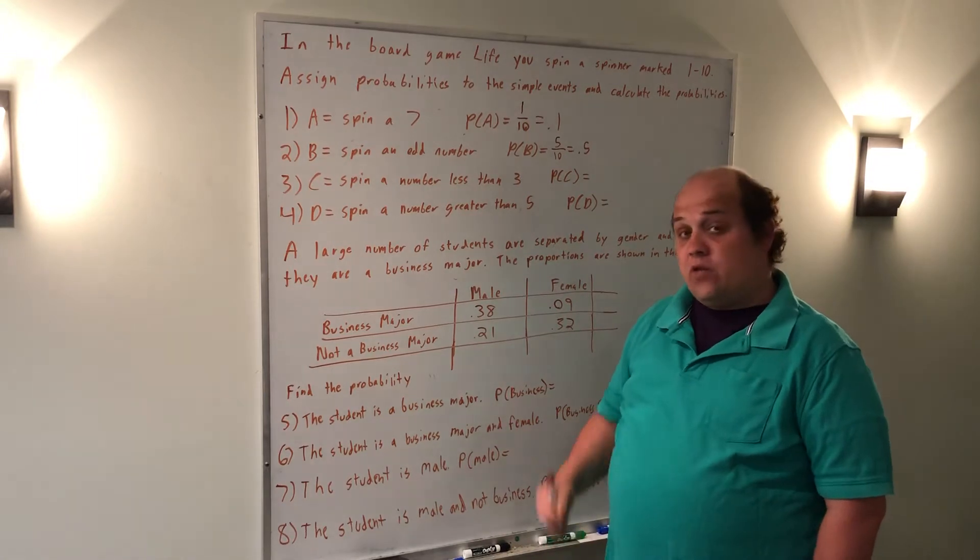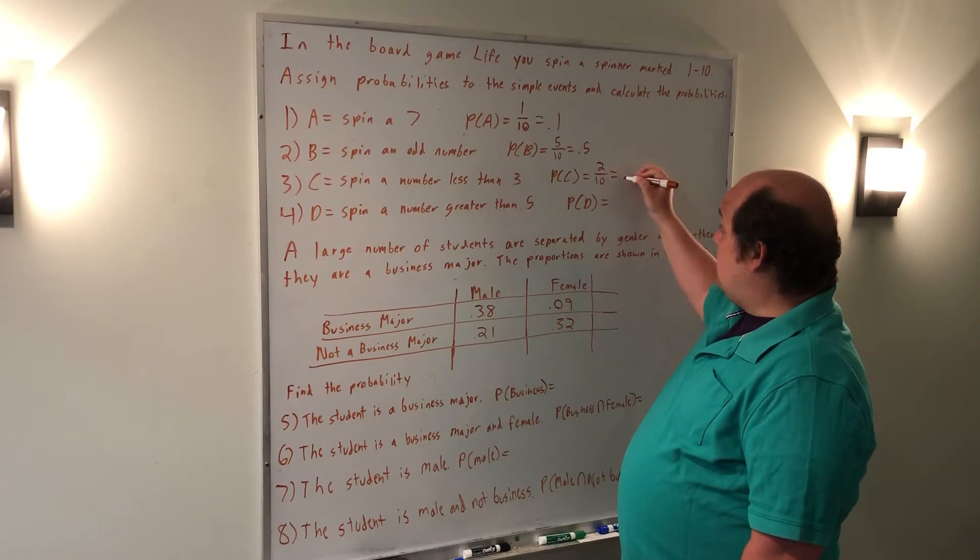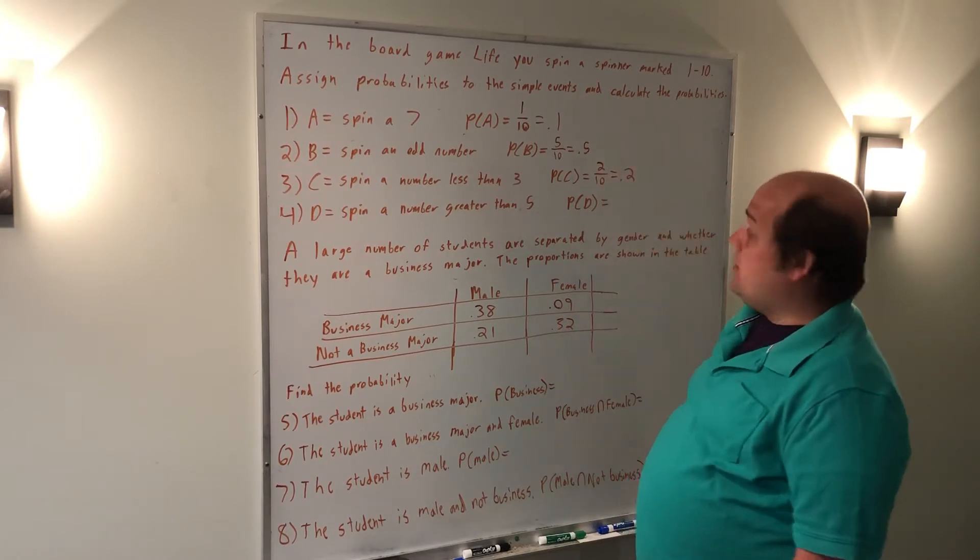Spin a number less than 3 only included 1 and 2. So there were 2 possibilities out of the 10. That's why the probability of it occurring is 0.2.